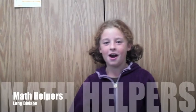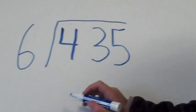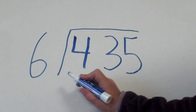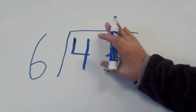Are you having trouble doing long division? Well, try our method. Let's say you want to do 435 divided by 6. First, see if 6 goes into 4. If it doesn't, like in this case, then put a 0 over the 4.